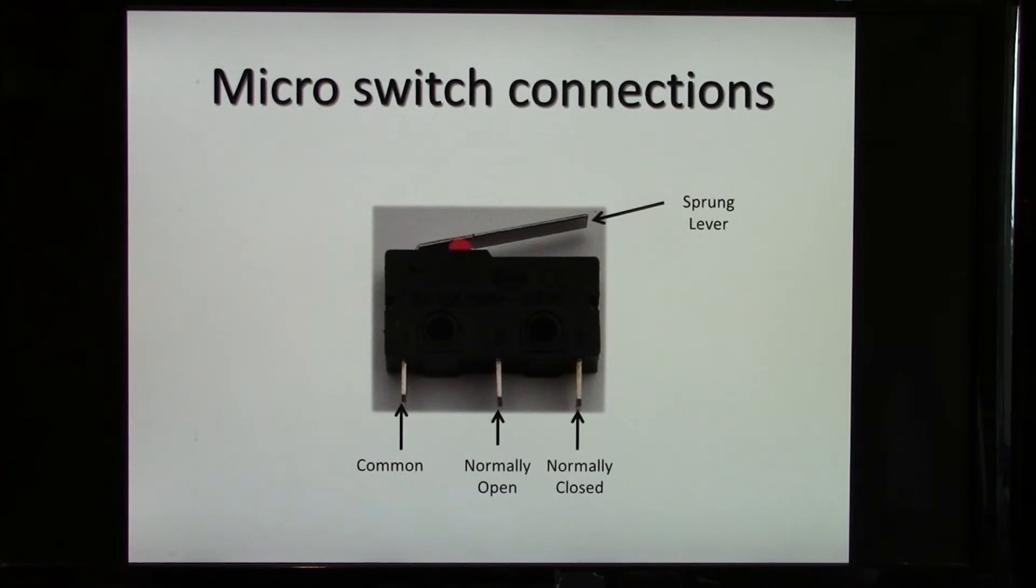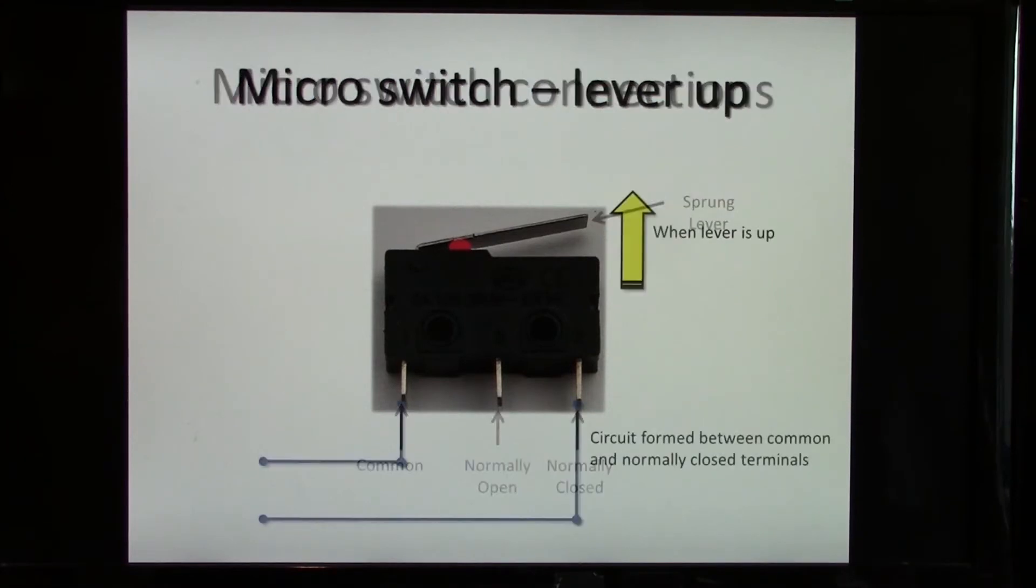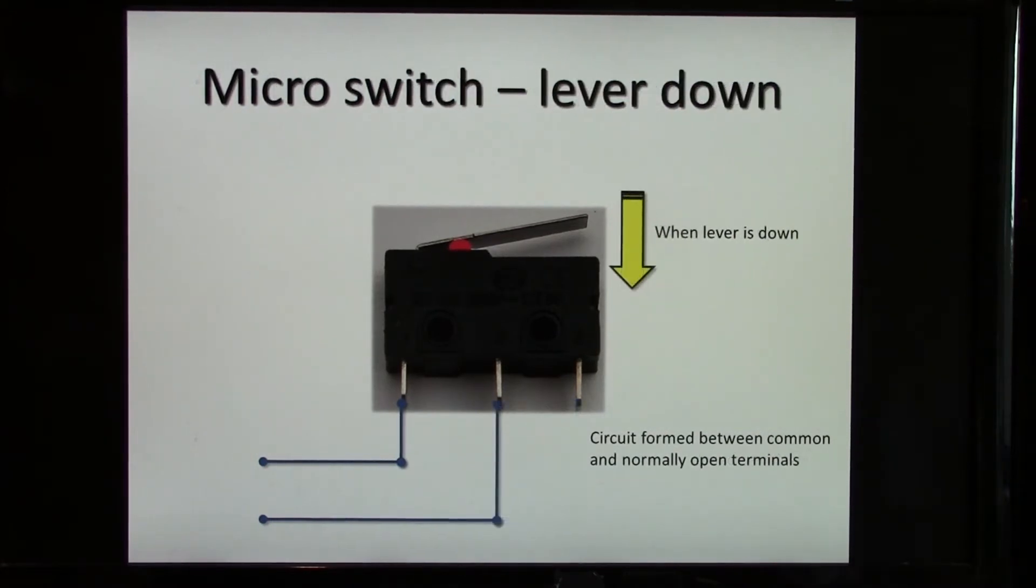This is your basic micro switch. It has a sprung lever on top and three connectors at the bottom. When the lever is up, the connector on the left is connected to the connector on the right. When the lever is down, the connector on the left—the common—is connected to the center.